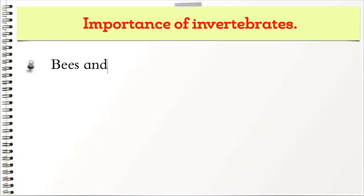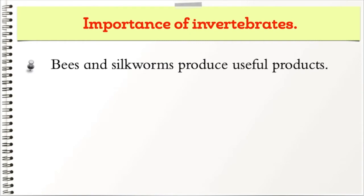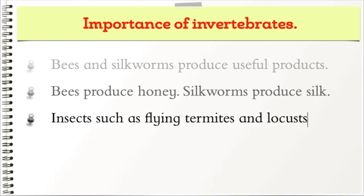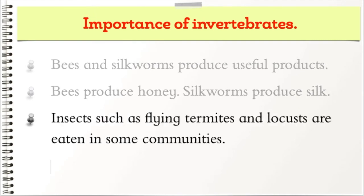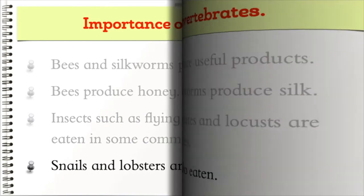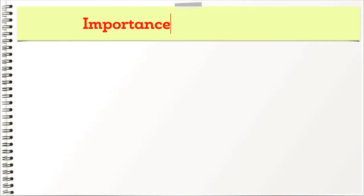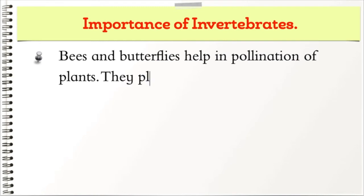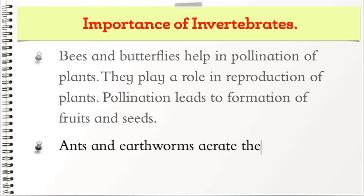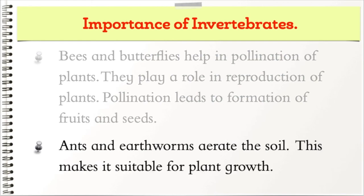What is the importance of invertebrates? Bees and silkworms produce useful products. Bees produce honey and silkworms produce silk. Insects such as flying termites and locusts are eaten in some communities. Snails and lobsters are also eaten. Bees and butterflies help in pollination of plants. They play a role in reproduction of plants. Pollination leads to formation of fruits and seeds. Ants and earthworms aerate the soil, making it suitable for plant growth.